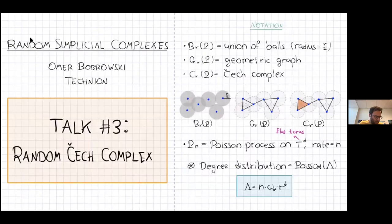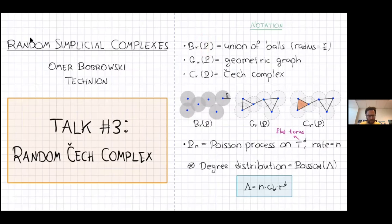I'll describe the models — I described them in my first talk, so I'll repeat it again because that was two days ago. I'll update the notation a little bit. We have a point set P in some metric space, and eventually I'm going to narrow it down to points on the D-dimensional flat torus.